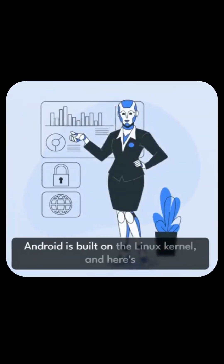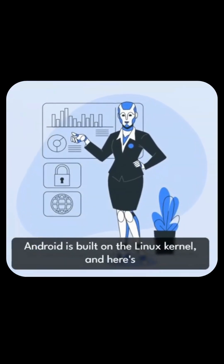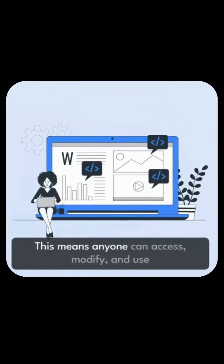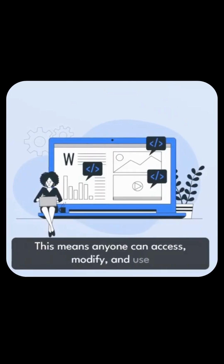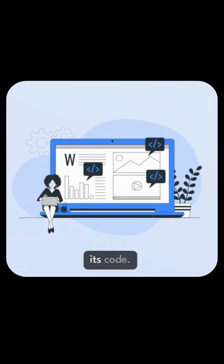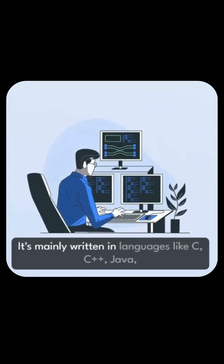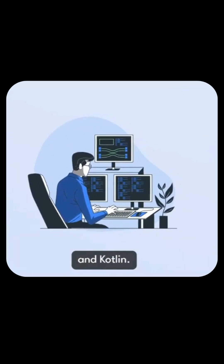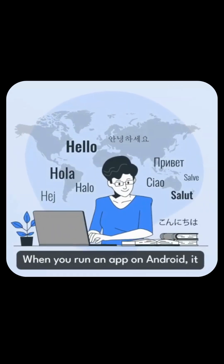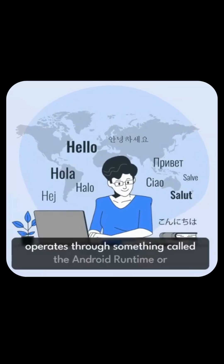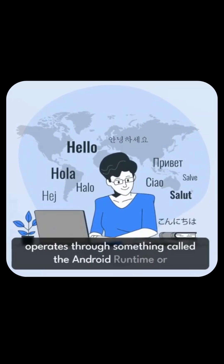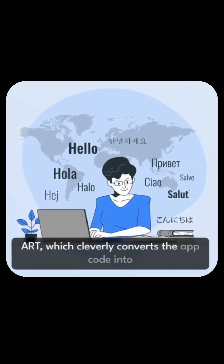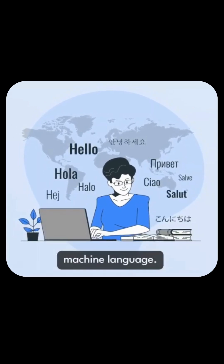Android is built on the Linux kernel and it's open source. This means anyone can access, modify and use its code. It is mainly written in languages like C, C++, Java and Kotlin. When you run an app on Android, it operates through something called the Android Runtime or ART, which cleverly converts the app code into machine language.